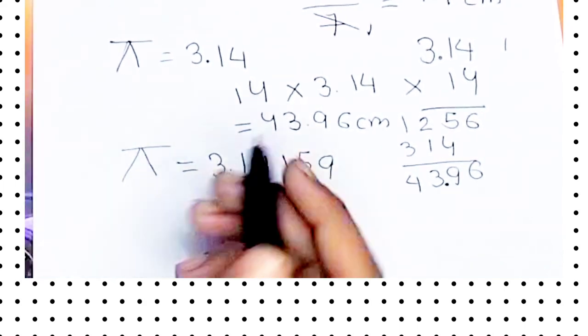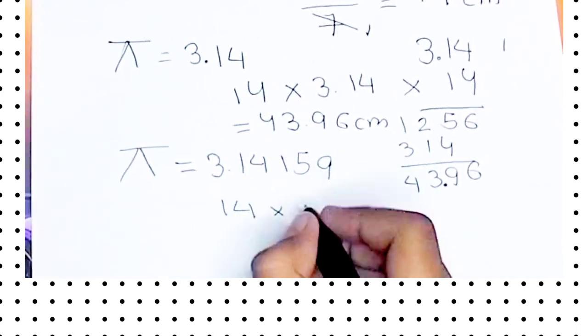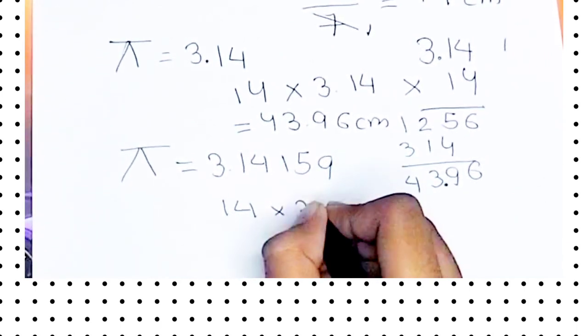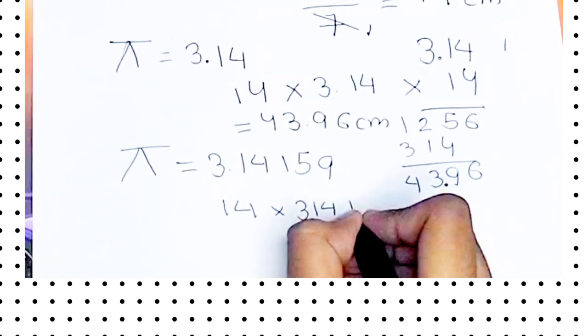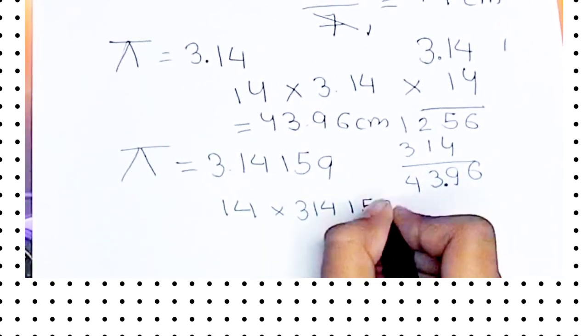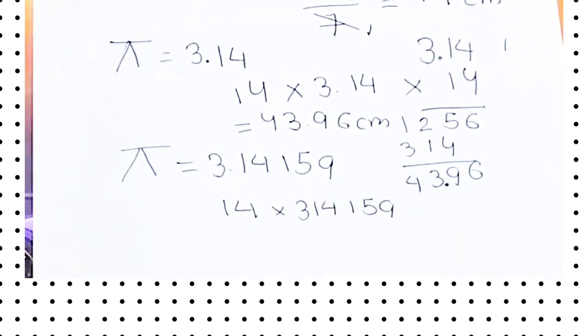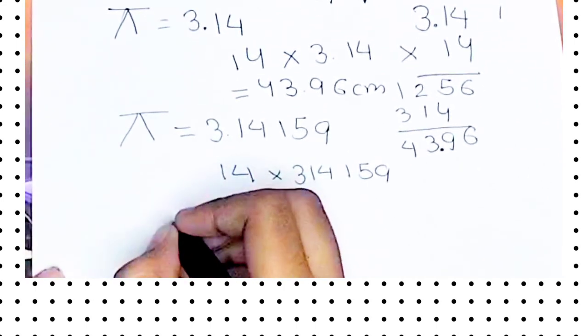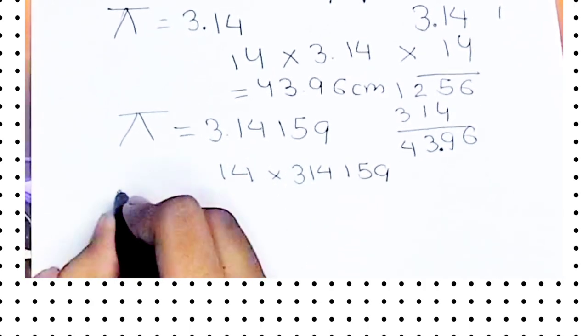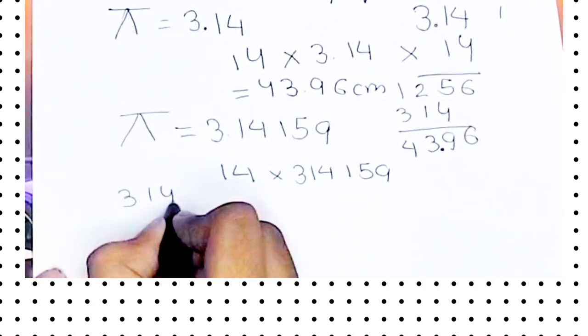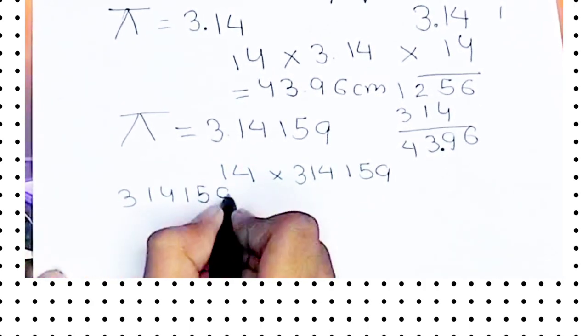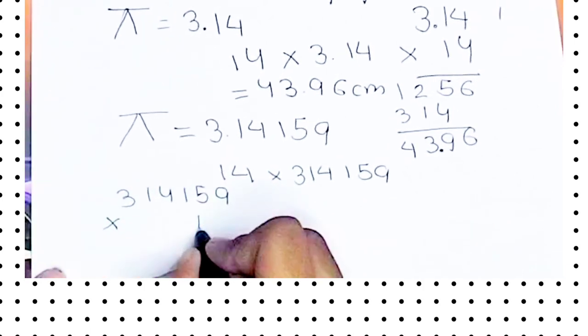First of all we are going to multiply that. Now you need to do a very big multiplication, so let's do that. I am doing a very big multiplication for you so that you can understand. So let's first multiply 3.14159 multiplied by 14.